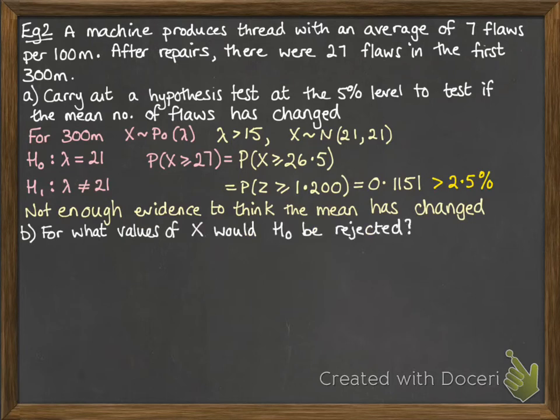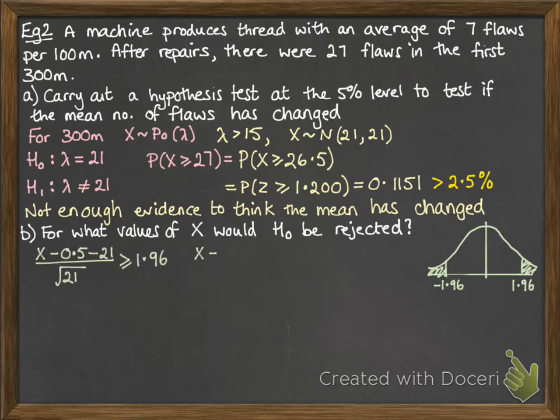For what values of x would the null hypothesis be rejected? So if we think about our two tails, the z value would have to be 1.96 and minus 1.96 to have that 2.5% on either side. So we apply the calculation to it. Now, before that carries on, let's just pause it there.